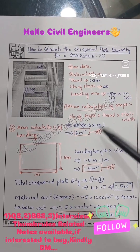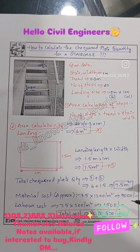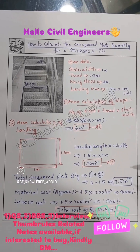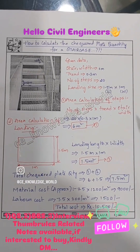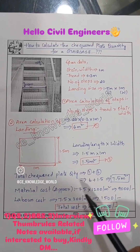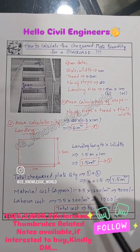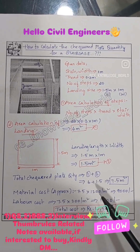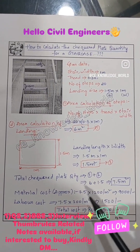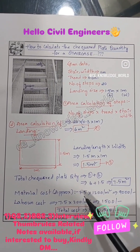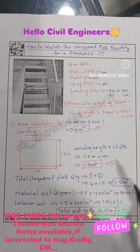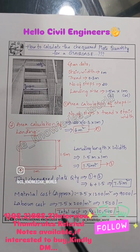So the total checkered plate required is 6 + 1.5 = 7.5 square meters. For material cost, the approximate cost per square meter for checkered plate is 1200 rupees, so 1200 × 7.5 = 9000 rupees.